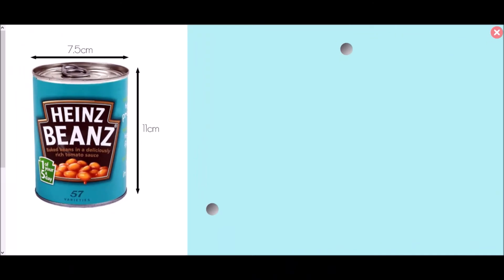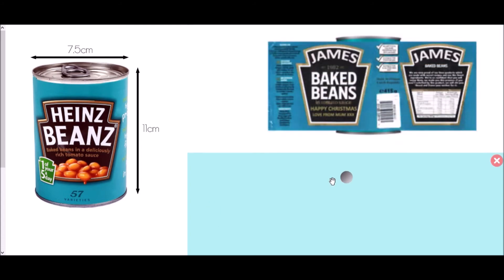Now let's look at the surface area of cylinders, starting with a tin of beans to demonstrate. The label wraps all the way around the outside of the tin. If you unwrapped the label, you'd see a rectangle — the curved surface area of a cylinder is actually a rectangle folded around to make the cylinder shape. Its width equals the circumference: pi times the diameter.